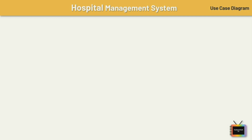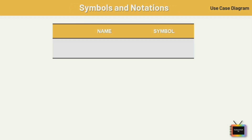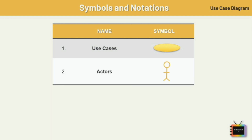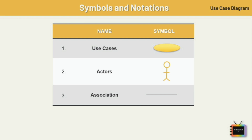First are use cases — horizontally shaped ovals that represent the different uses a user might have. Next are actors — stick figures that represent the people actually employing the use cases.